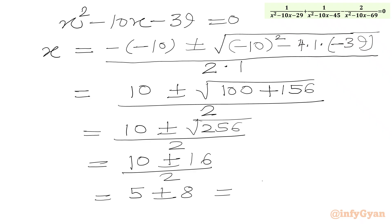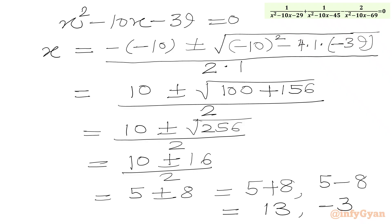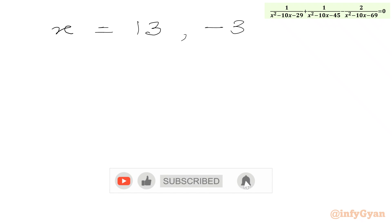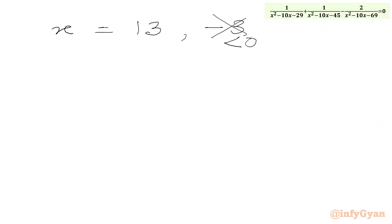With the plus sign we get 5 + 8 = 13, and with the minus sign we get 5 - 8 = -3. So the values of x are 13 and -3. Since the problem asks for positive solutions, we reject -3 and accept 13. So our final answer is x = 13.